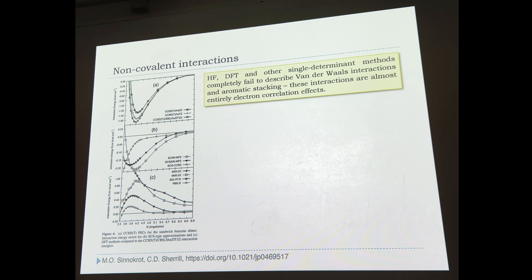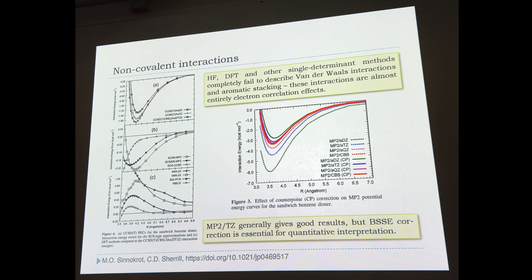Even high-level CCSD(T) in large basis sets for the benzene dimer — benzene does stick to itself — shows that certain levels of theory give completely wrong interaction potentials; DFT gets it dramatically wrong. MP2 does have a minimum, but counterpoise correction for basis set superposition error is quite important — otherwise the depth of the energy minimum is incorrect. Essentially, MP2 in a triple-zeta basis is generally okay for polarizability-driven non-covalent interactions, but BSSE must be accounted for.